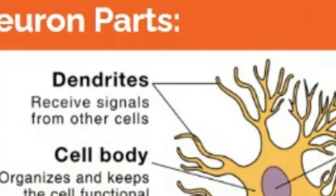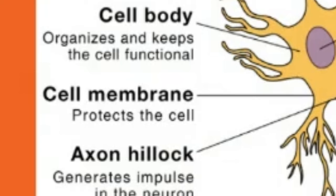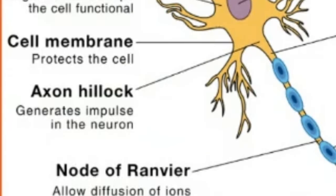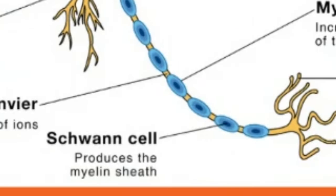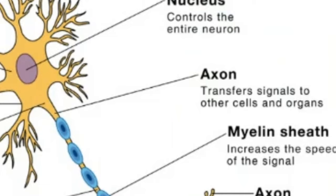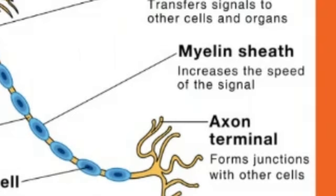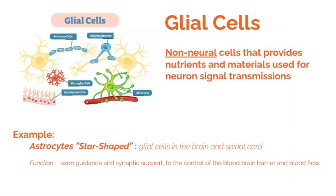For neuron parts: the dendrites receive signals from other cells; the cell body organizes and keeps the cell functional; the cell membrane protects the cell; the axon hillock generates impulses; the node of Ranvier allows diffusion of ions; the Schwann cell produces the myelin sheath; the nucleus controls the entire neuron; the axon transfers signals to other cells and organs; the myelin sheath increases signal speed; and the axon terminal forms junctions with other cells.